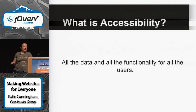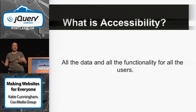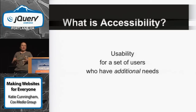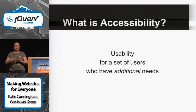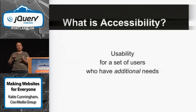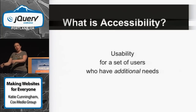So what is accessibility? Accessibility is basically all of the data and all of the functionality for all of the users. The way I like to think about it is that accessibility is actually usability for a set of users who have additional needs. People forget that people who are blind or deaf or have other issues still want easy-to-use websites — they want sites that aren't overcomplicated or too busy. They want the same websites you want, but they have a few additional needs you need to consider.